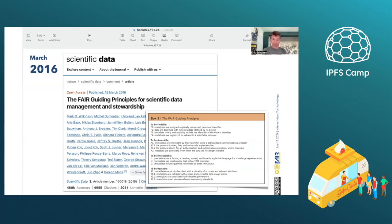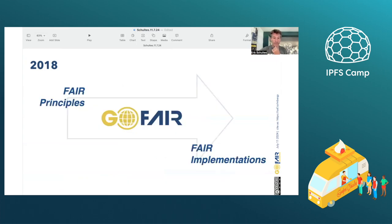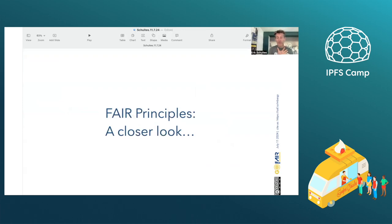The FAIR principles themselves were introduced as a simple figure — Box Two — consisting of 15 one-liners that laid out high-level principles to enable machine actionability. But there was very little said about how they should be implemented. Google Scholar data really shows this incredible uptake around the FAIR principles — we seem to have found a serious pain point in the data ecosystem, and FAIR offers a framework on how to address it. In 2018, the GoFair initiative was launched as a way to coordinate and catalyze the translation from principles into implementations.